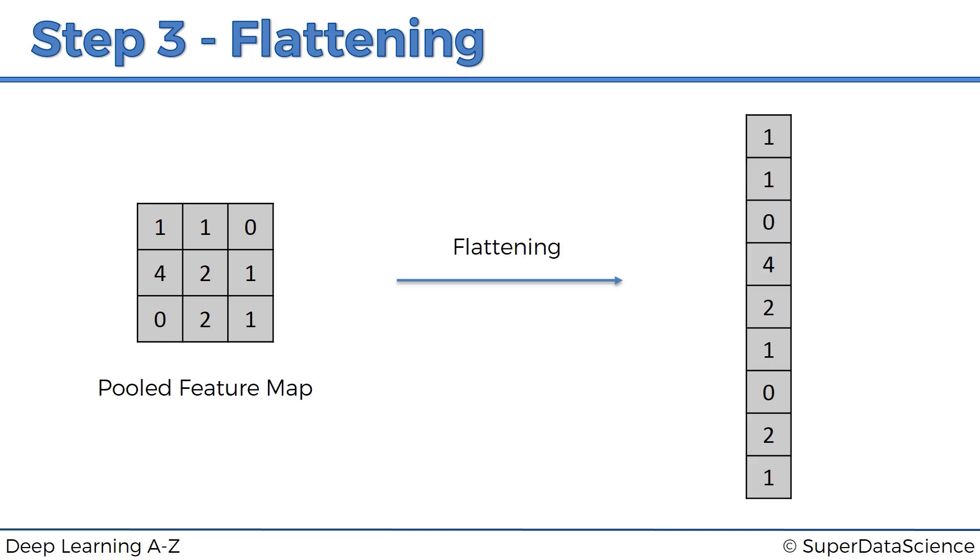Well we're going to take it and we're going to flatten it into a column, so basically just take the numbers row by row and put them into this one long column. And the reason for that is because we want to later input this into an artificial neural network for further processing.